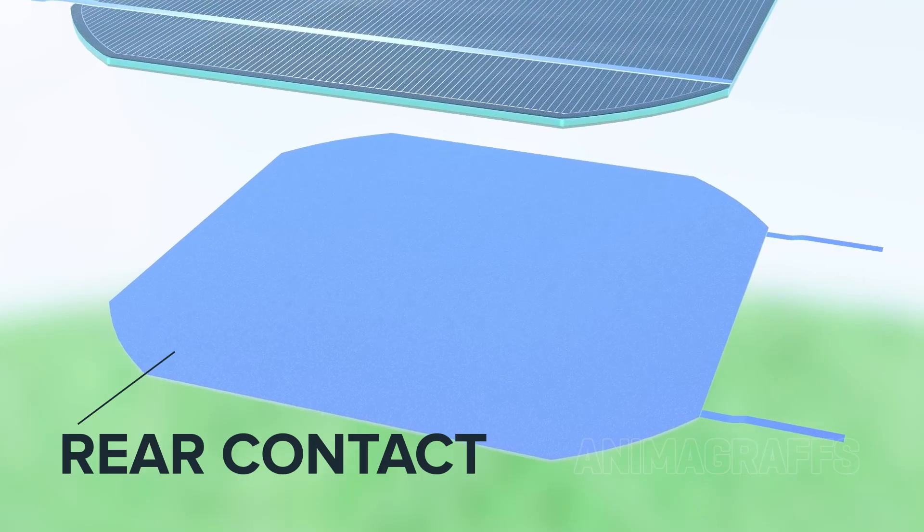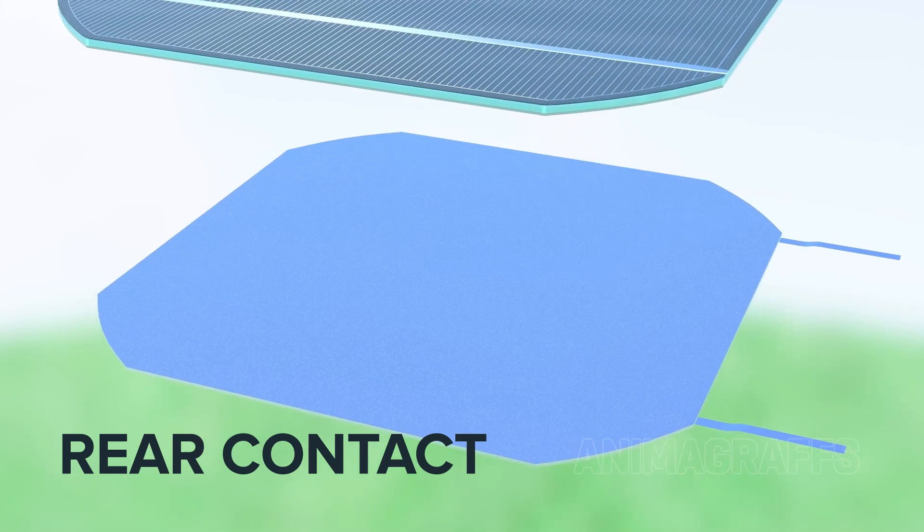Aluminum rear contact. A rear aluminum layer completes the electrical circuit. Electrical contacts protrude through the passivation layer.